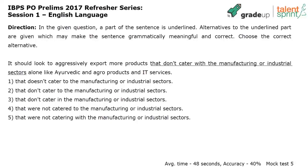In the given question, a part of the sentence is underlined, and alternatives to the underlined part are given which may make the sentence better. We're talking about sentence improvement. It should look to aggressively export more products that don't cater with the manufacturing or industrial sectors alone like Ayurvedic and agro products and IT services. We have the phrase that is underlined, and we need to figure out if the phrase as it is is correct or if we have to make any changes.